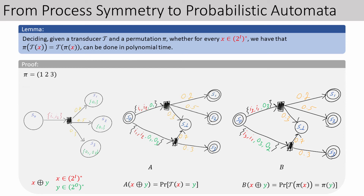Next, we construct the automaton B. For this example, take the cyclic permutation 1, 2, 3. The structure of B is identical to that of A, but the letters are different. In B, in order to take the analogous transition from S0, we need to see the input I3, I1, since applying the permutation to I3, I1 gives I1, I2. Similarly, the output letters we look at are O3 and O3, O2. This way, the acceptance probability of the composed word in B is the probability that given pi of x, the transducer outputs pi of y. Having constructed A and B, we have that T is pi-symmetric if and only if A and B are equivalent. Fortunately, equivalence of probabilistic automata is decidable in polynomial time, so we just check whether A and B are equivalent.